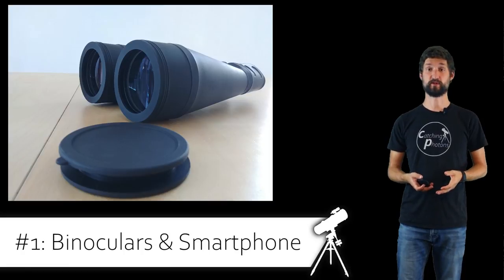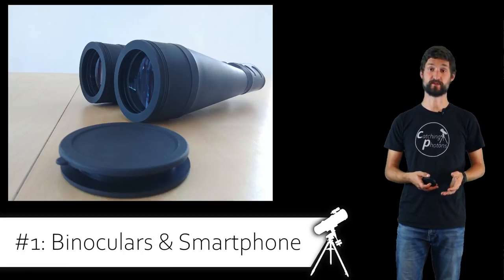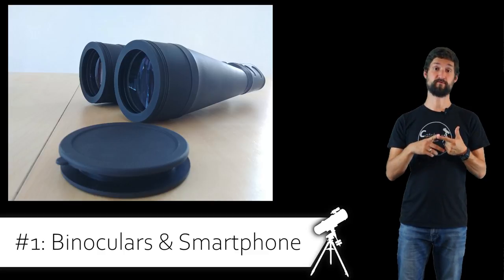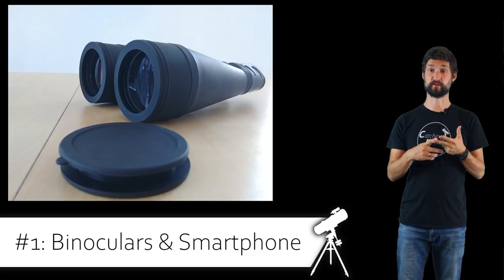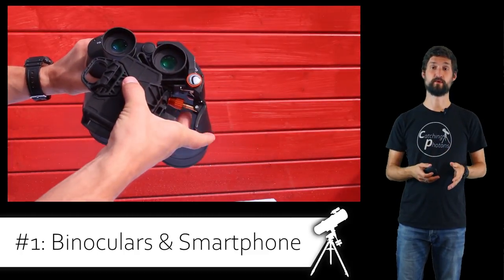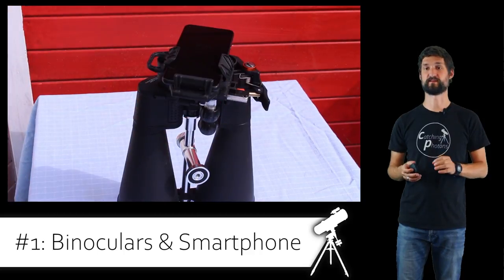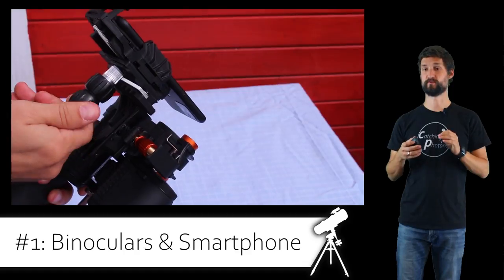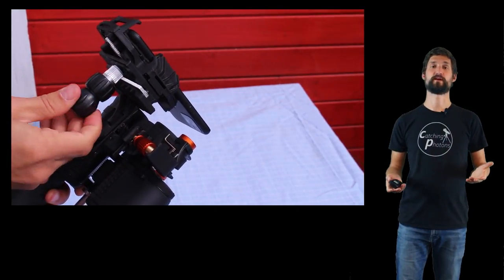First thing: I used mid-price binoculars and attached my smartphone onto it using the Celestron adapter. This means no tracking, no fine focus, and probably high chromatic aberrations. Adapter onto here, this screw locked, slide the smartphone inside. Now use these screws to align the lens with the eyepiece, and you're good to go. Then using a tripod, point the binoculars towards Jupiter.